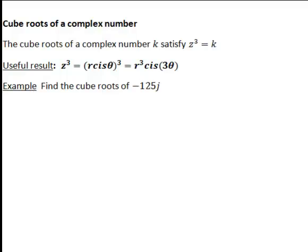So to see the full process of finding cube roots of a complex number, let's consider finding the cube roots of -125j. You'll notice this number is written in Cartesian form, so the first step is to convert it to polar form.